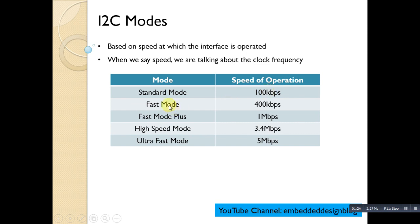There is a fast mode which operates up to 400 kbps, fast mode plus up to 1 Mbps, high speed mode at 3.4 Mbps, and ultra fast mode up to 5 Mbps. In most cases we don't operate at the maximum speed unless required, because I2C is a low-speed protocol used in embedded systems. Generally, most embedded engineers operate at 100 kbps or 400 kbps even when using a high-speed mode chipset.